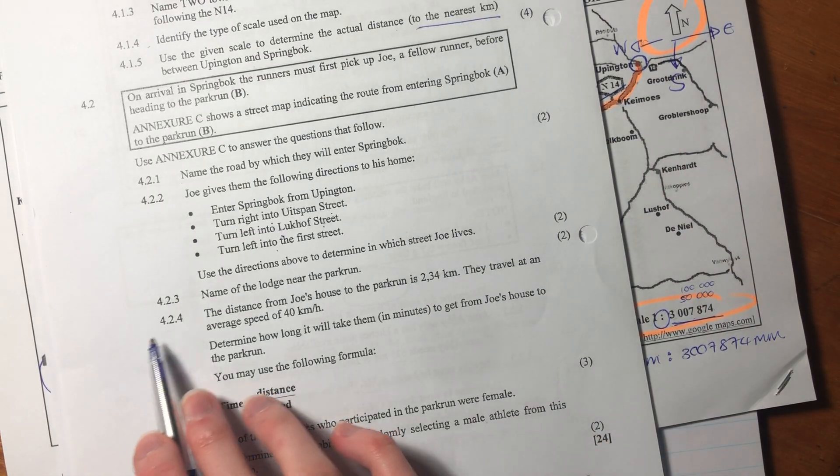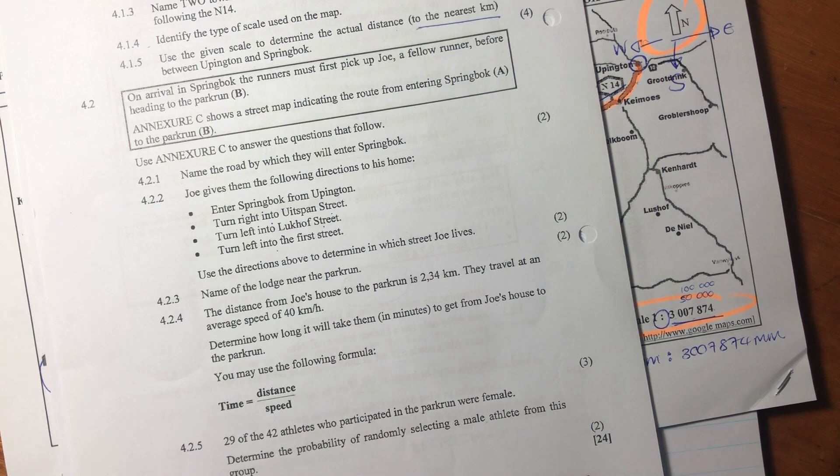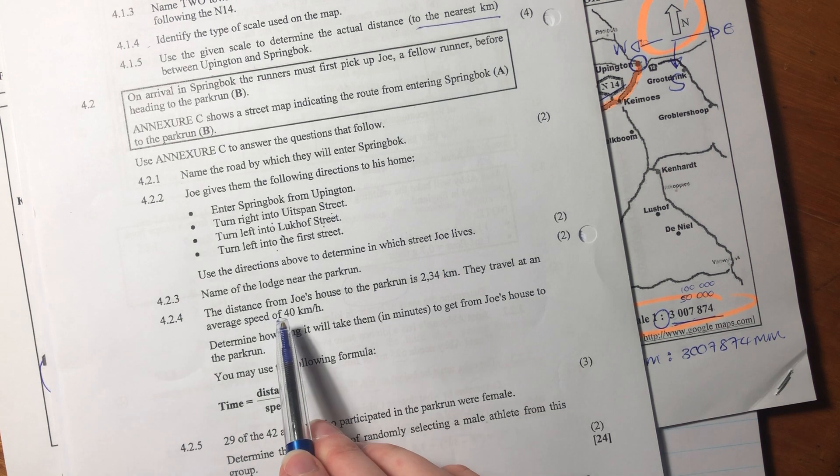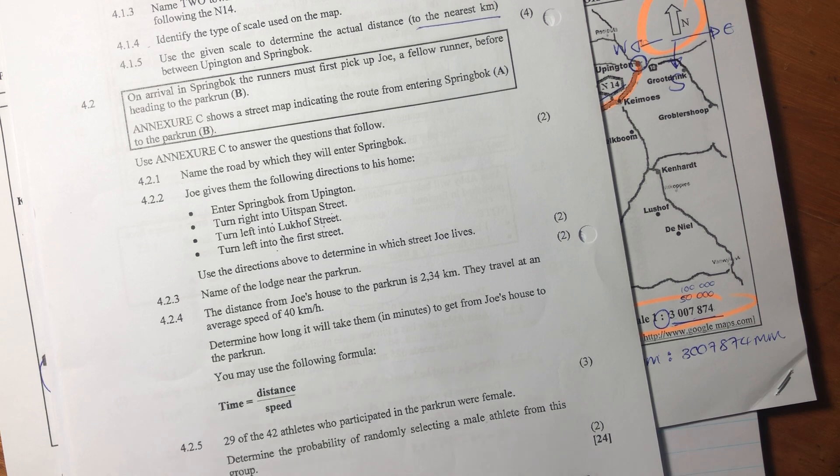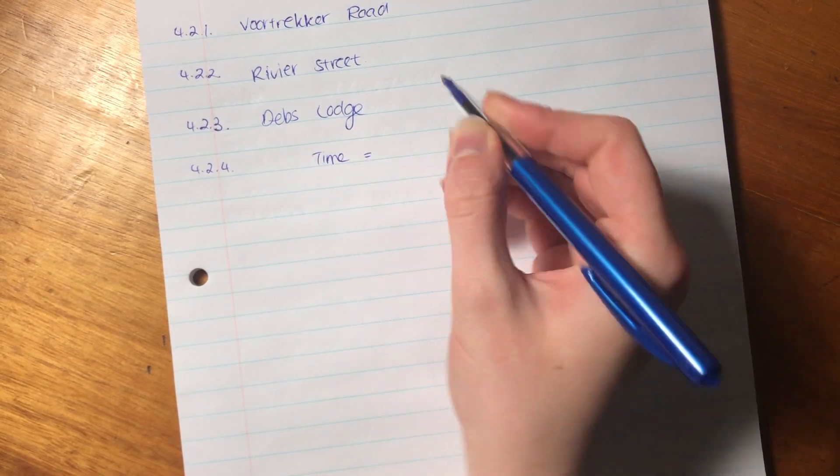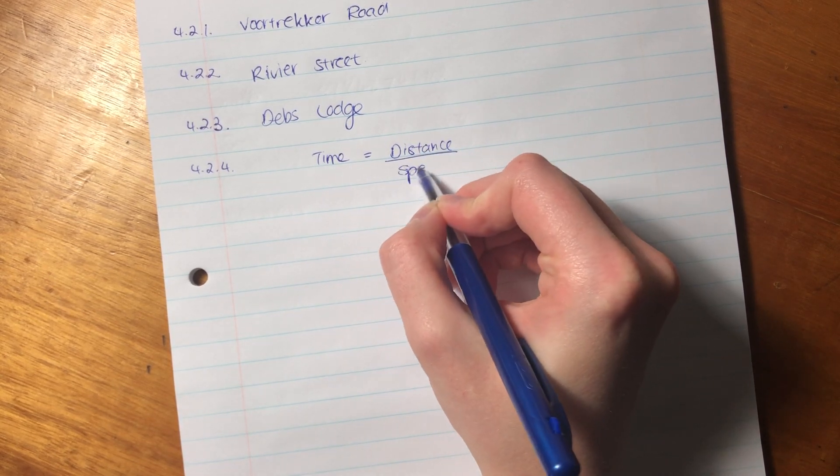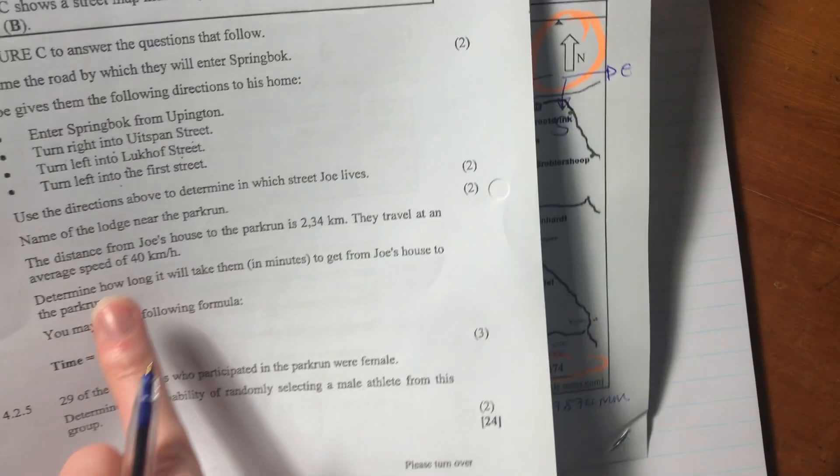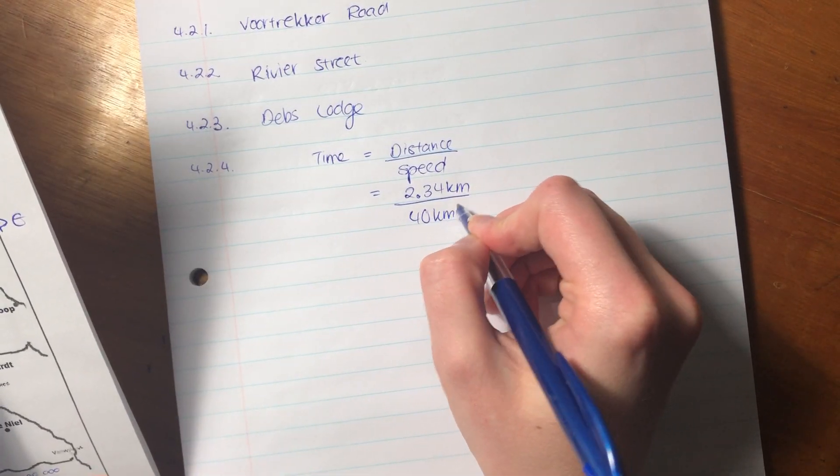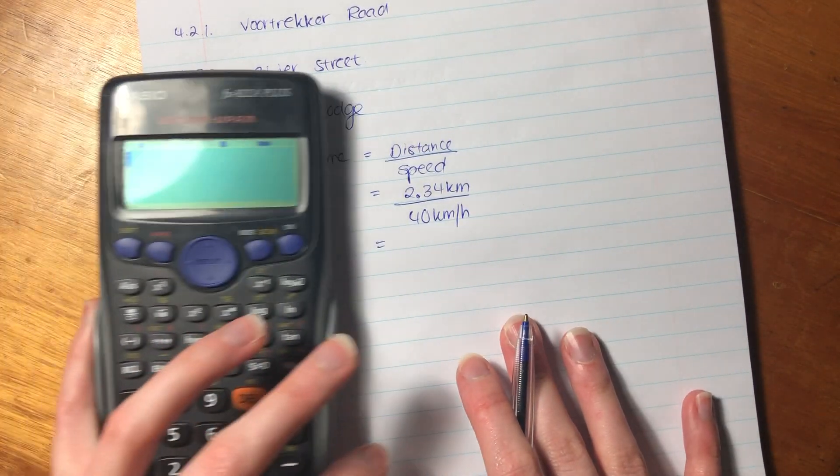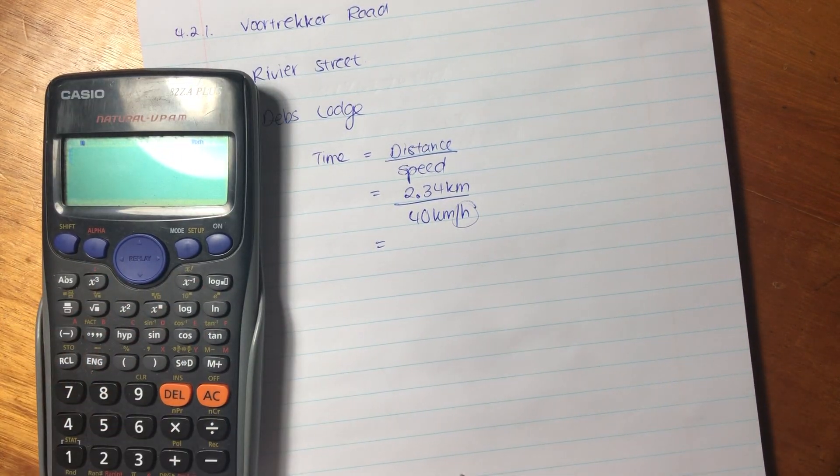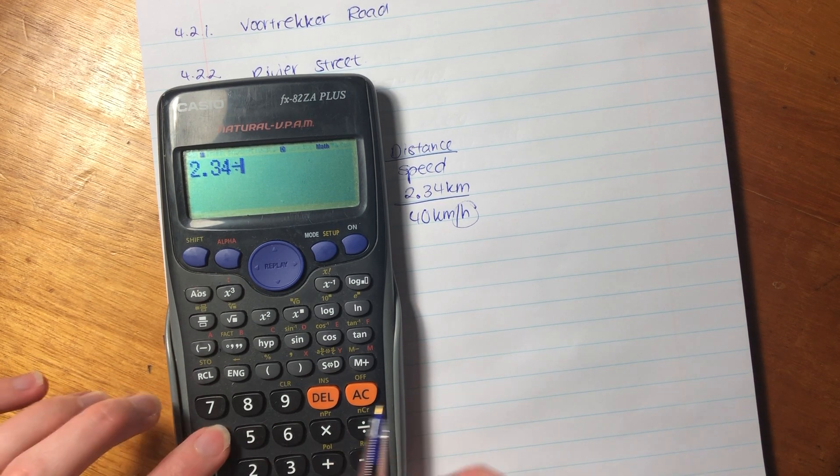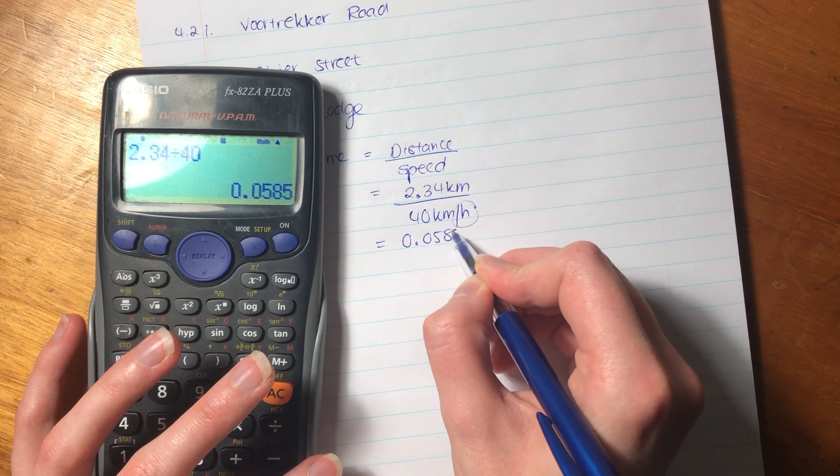Let's now go on to our next question. Sorry for all the bugs. Now 4.2.4. The distance from Joe's house to the parkrun is 2.34 kilometers. They travel at an average speed of 40 kilometers per hour. Determine how long it will take them in minutes to get from Joe's house to the parkrun. And we can use this little formula. It's always nice to know we have a formula. So let's just write that down. So we want the time and that equals distance over speed. And we know that the distance they give that to us is 2.34 kilometers. And our speed is 40 kilometers per hour.